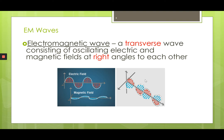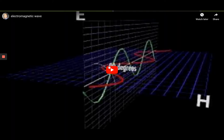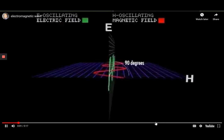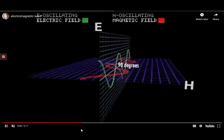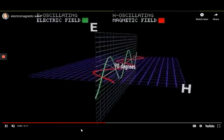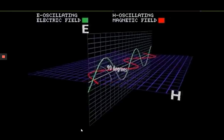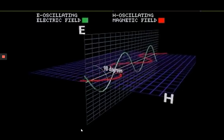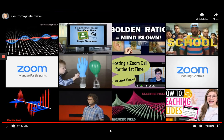We can see that in this small video. Here you can see that the magnetic field is moving up and down and it is a transverse wave, and the energy is propagating perpendicular to the particle motion. The same thing is happening with the magnetic field, and they move at right angles to each other.